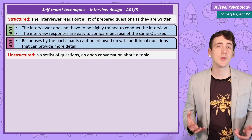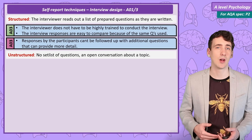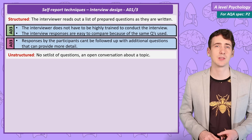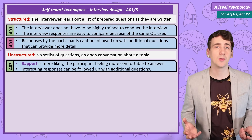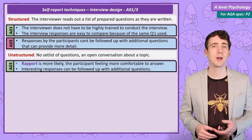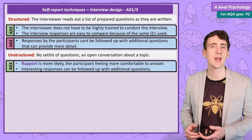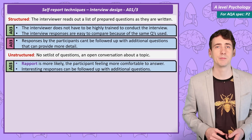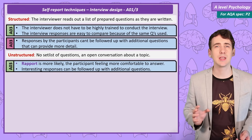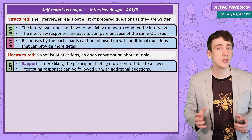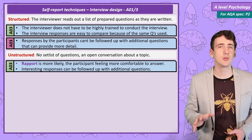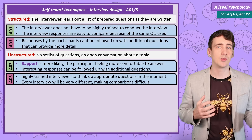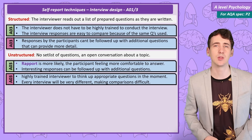An unstructured interview is when the interviewer doesn't have a set list of questions — it's a free-flowing informal conversation with a general topic to discuss. An advantage of this approach is you're likely to develop rapport with the participants, meaning they feel more comfortable and may be more likely to give personal information. It also means that if the interviewee says something interesting you can develop that point. But with this style you do need a highly trained interviewer, and as every interview is different it's going to be really hard to compare multiple interviews.